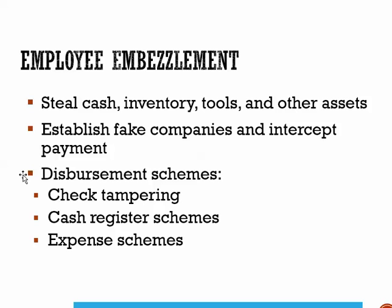Examples of disbursement schemes include check tampering — where the employee writes a fraudulent check payable to him or herself, or obtains a check intended for an outside party, endorses it, and then cashes it. There are also cash register schemes, where an employee gives a false refund for returning merchandise by filling out a refund form and pocketing the cash, or accepts cash from a customer for a purchase but does not record the transaction in the cash register.